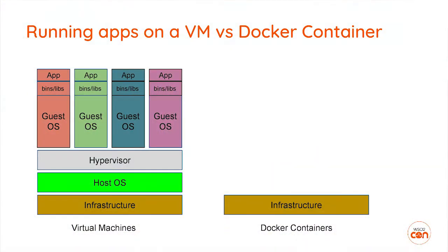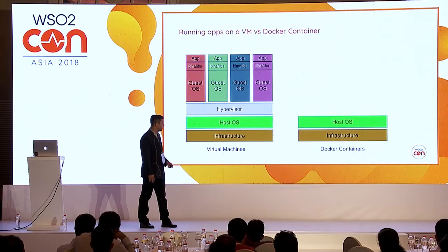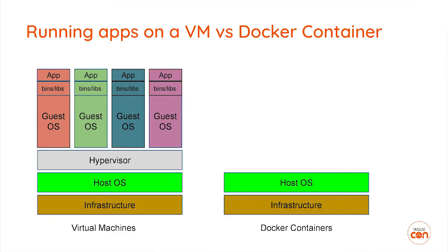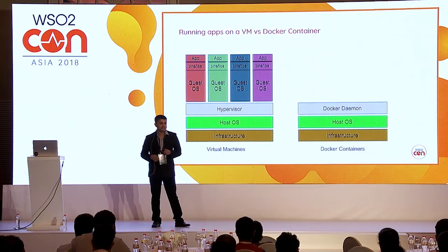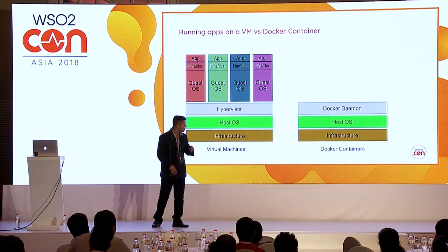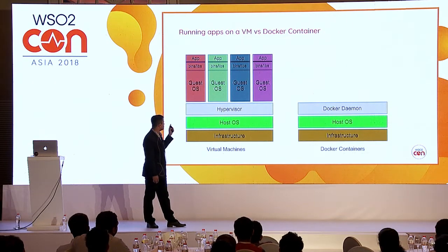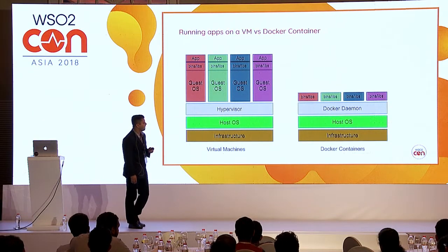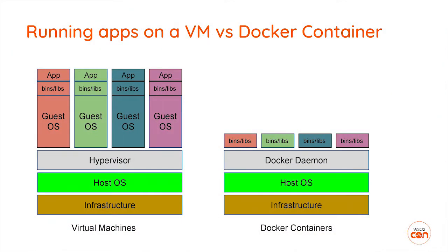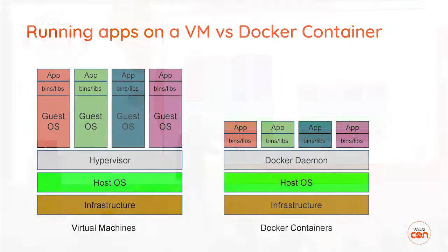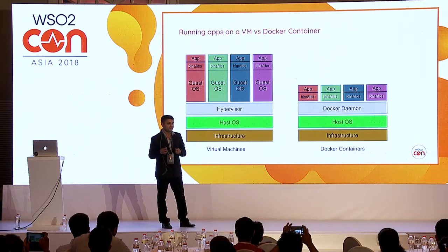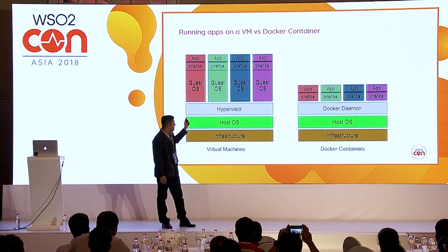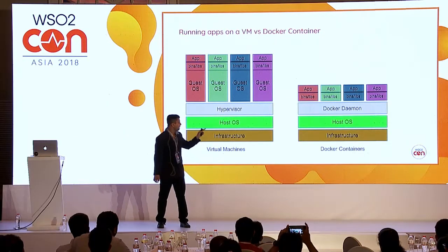In the container world with Docker, we still need the infrastructure and a host operating system, but instead of a hypervisor we have the Docker daemon. The Docker daemon interacts with Docker containers and runs Docker images. On top of the Docker daemon, rather than a guest operating system, we have the binaries, libraries, and the application — this layer is the Docker image. Even though there's no guest OS, isolation is maintained by the Docker daemon.